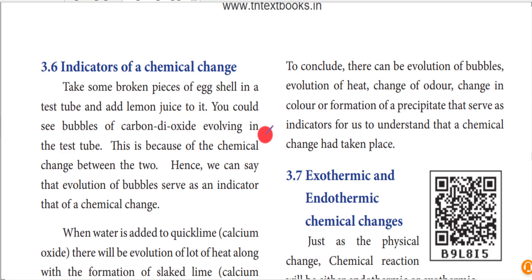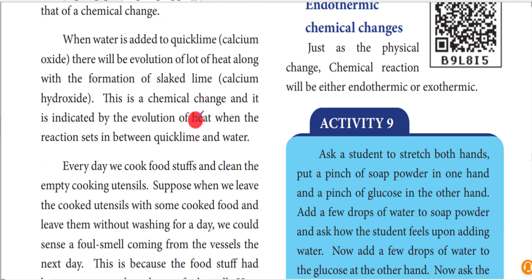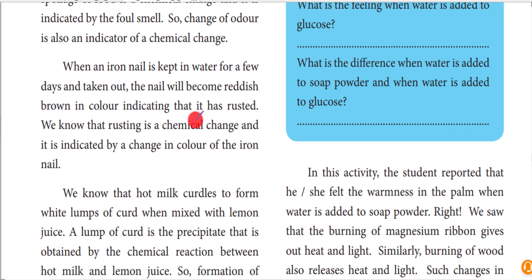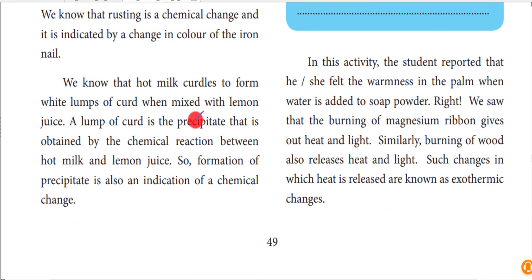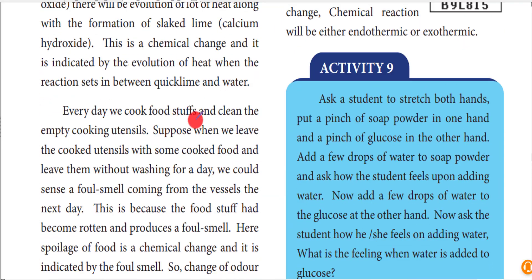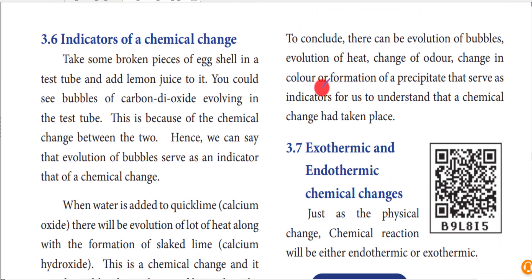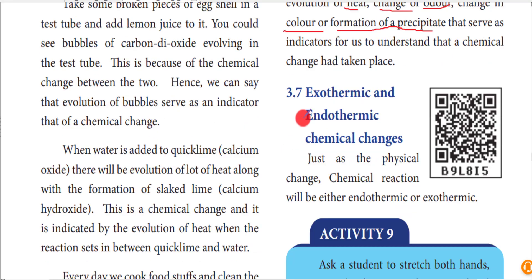What are the indicators of chemical change? For example, take a broken eggshell and put lemon juice on it - it will produce carbon dioxide. Indicators include: formation of new substances, formation or release of heat, change in temperature such as cooling down, and precipitation. Also, change in color, change in odor and smell, and any precipitation can indicate that a chemical change has occurred.